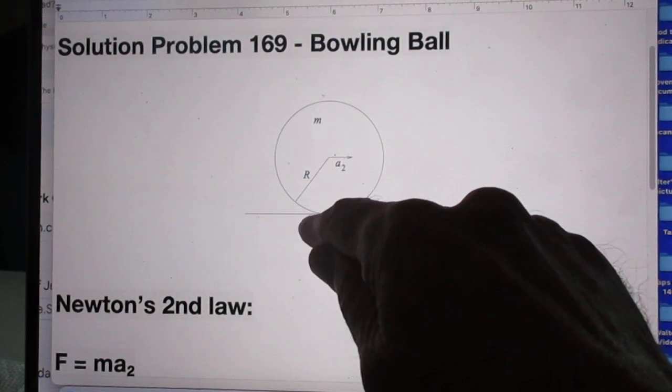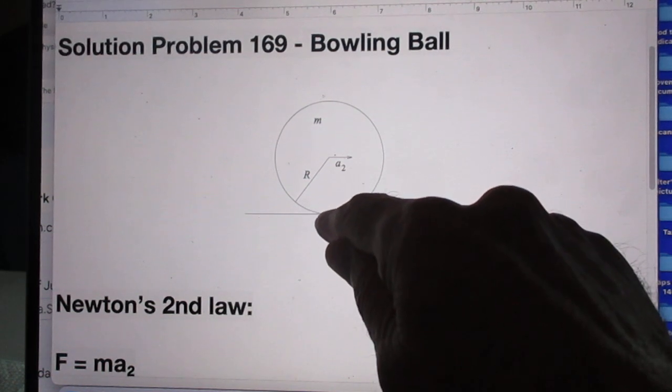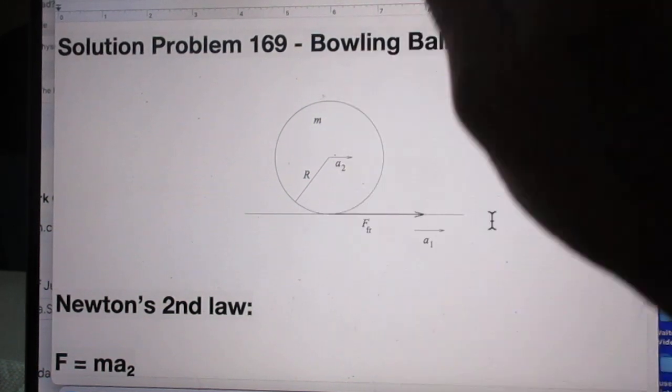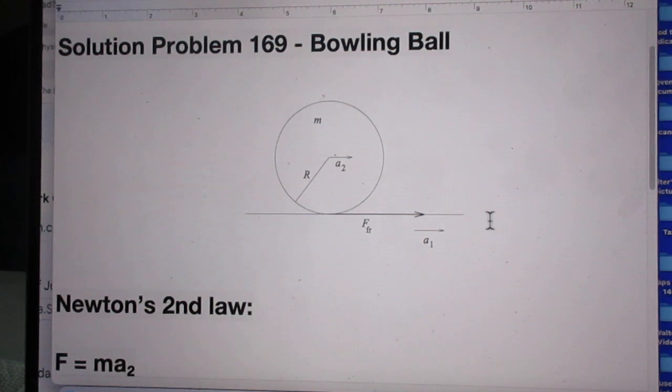Then there never is any slip here. Therefore, no heat is produced here, because if there is slip, there will be heat.